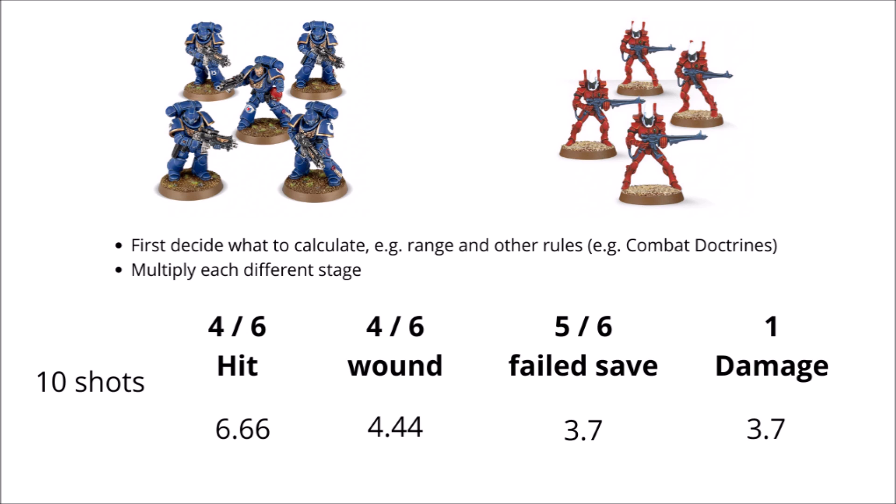In any case, let's go through a simple example. First, you need to decide what you're going to be calculating: what range the models are going to be at if it matters for rapid fire weapons, and any other special rules that are going to apply, such as combat doctrines for the Space Marine Intercessors here. I then go through a typical shooting phase for them, starting with the number of shots. These five Intercessors have 10 shots, so we'll start with that.